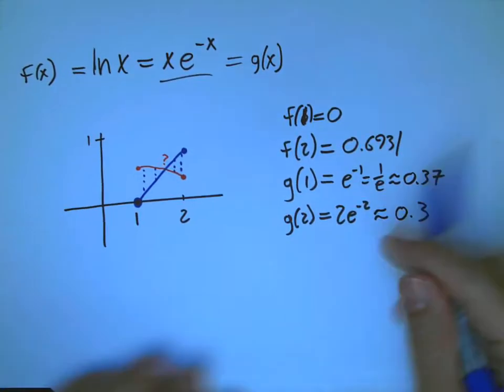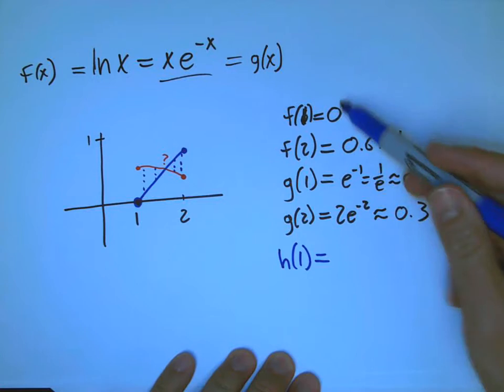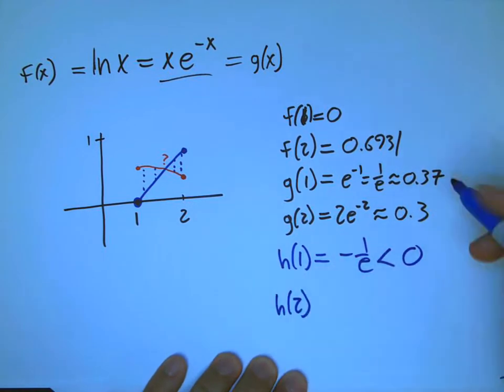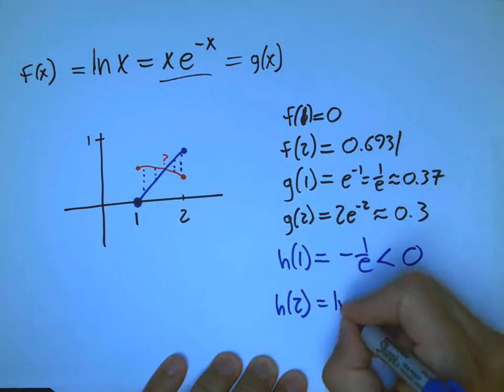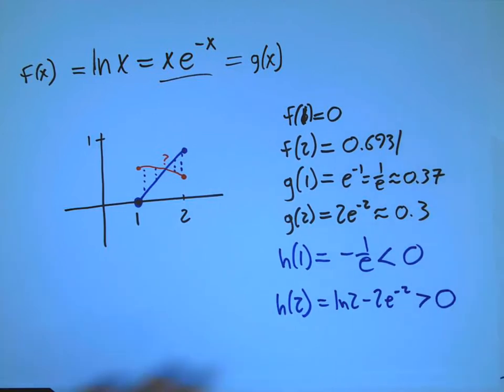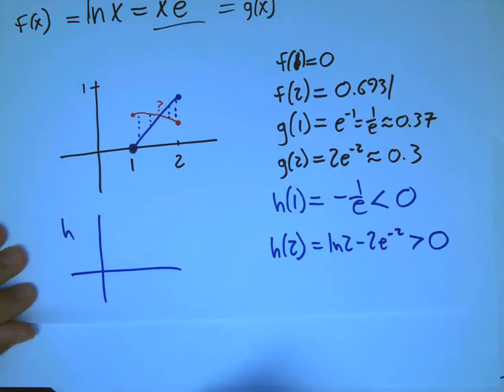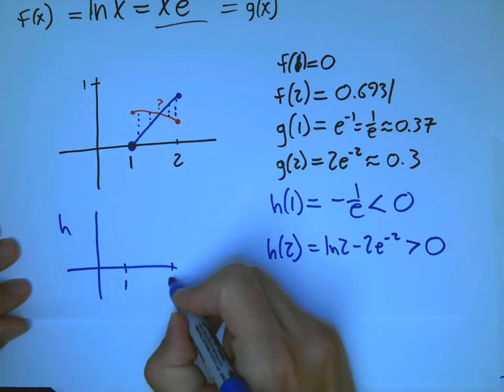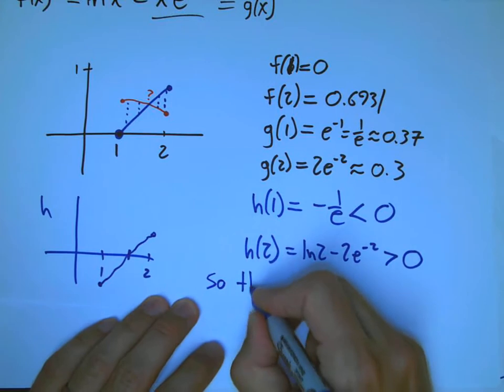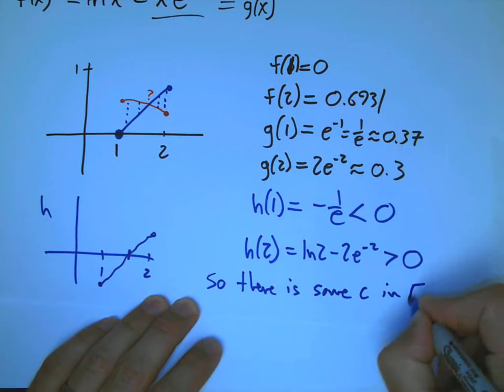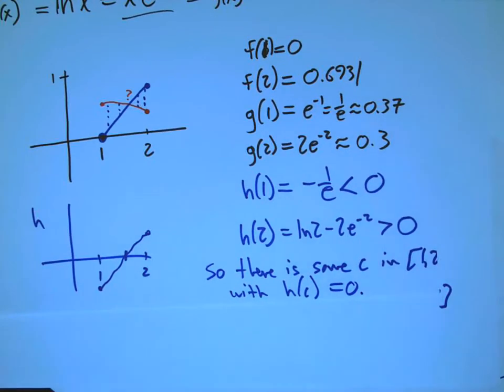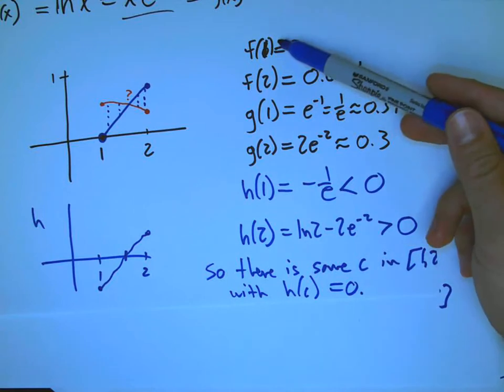And the book talks about how important that is. So now finally we're ready to do our problem. We're just going to calculate h of 1 is f of 1 minus g of 1. That's about minus 1 over e, that's definitely less than zero. h of 2 is f of 2 minus g of 2. To be really precise, that's ln 2 minus 2e minus 2, and it's easy to calculate that that is greater than zero. And so when we graph h, that's going to go from 1 to 2, it's going to go from the negative number up to a positive number. So there is some C in 1, 2 with h of C equals zero.